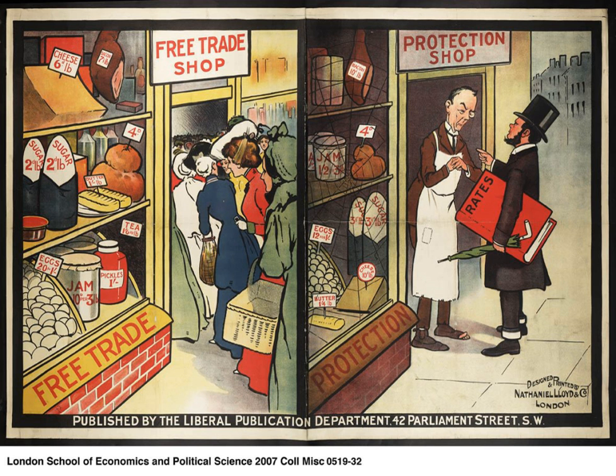In the decades after World War II, Japan's rapid rise led to trade friction with other countries. Japan's recovery was accompanied by a sharp increase in exports of certain product categories: cotton textiles in the 1950s, steel in the 1960s, automobiles in the 1970s, and electronics in the 1980s. In each case, the rapid expansion in Japan's exports created difficulties for its trading partners and the use of protectionism as a shock-absorber.